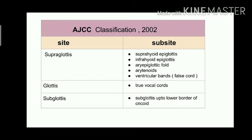The AJCC classification is based on site and subsite. In the supraglottis, cancer can involve the suprahyoid epiglottis, infrahyoid epiglottis, aryepiglottic fold, arytenoids, and ventricular bands — that is, the false vocal cords. In the glottis, the subsite is the true vocal cord. In the subglottis, the subsite extends up to the lower border of the cricoid cartilage.